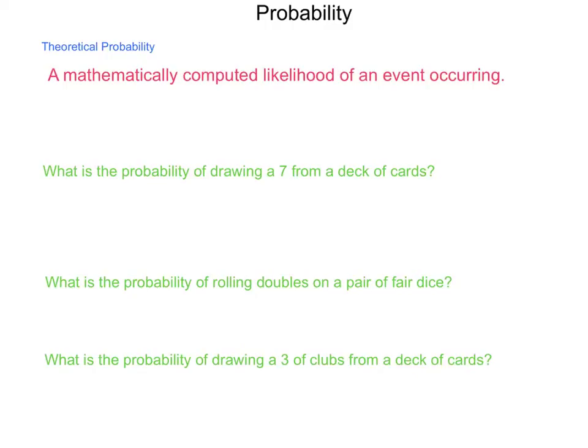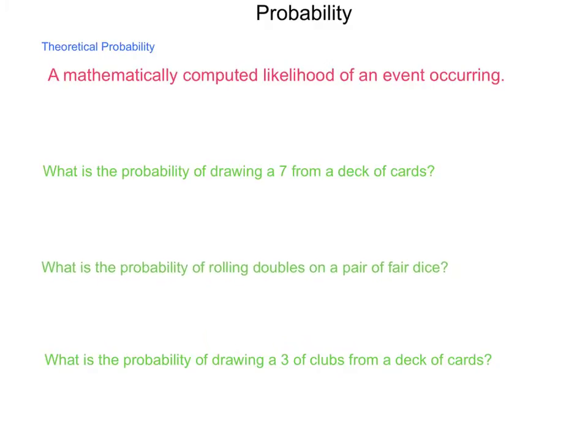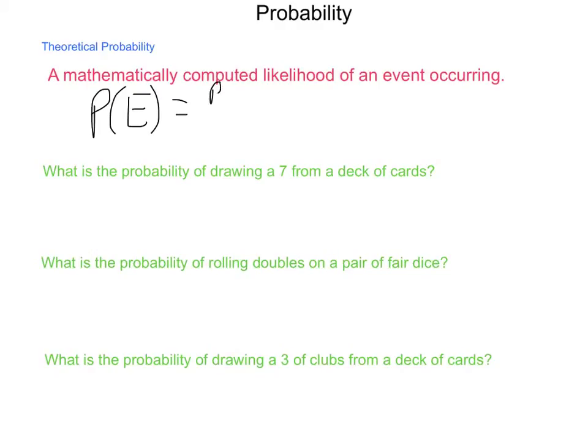Theoretical probabilities are mathematically computed likelihoods of an event occurring. This is where you say, from the situation, we have A out of B attempts. We have to build these up based on situations that we see happening around us. Probability of the event E equals the probability of success divided by probability of all.